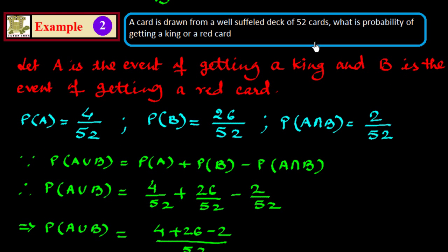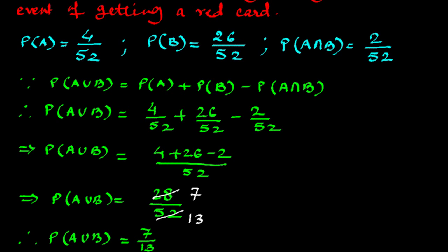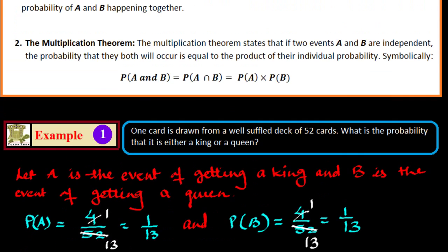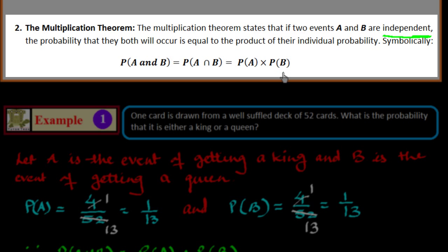Here we are getting the probability of a card which is a king or a red card, or maybe both — which may be a red king. In this way we find the probability using the Addition Theorem. Now I explain the Multiplication Theorem. The theorem states that if two events A and B are independent — the main thing here is the events must be independent — the probability that both will occur is equal to the product of their individual probabilities: P(A∩B) = P(A) × P(B). In the Addition Theorem we used summation; here we use the product of individual probabilities.